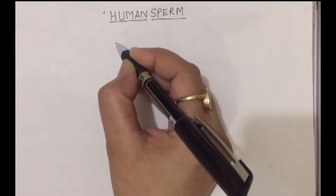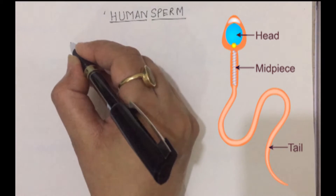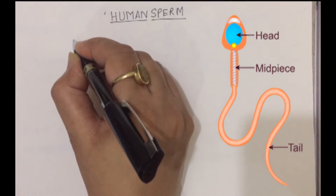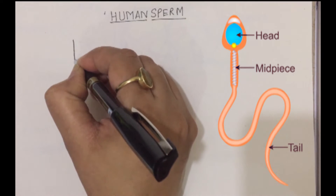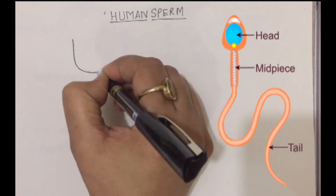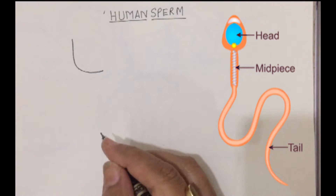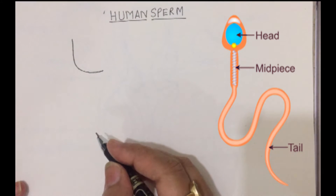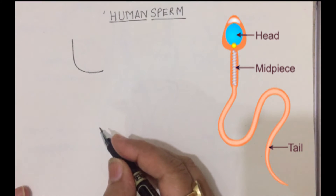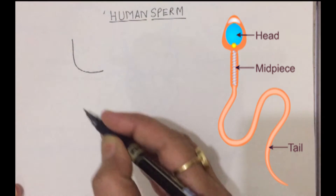Now let us start with the sperm. Sperm has three parts: the first part is known as the head, the second part is known as the middle piece, and the third part is known as the tail.